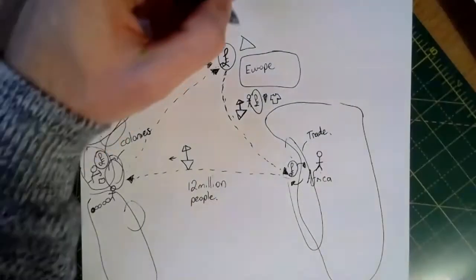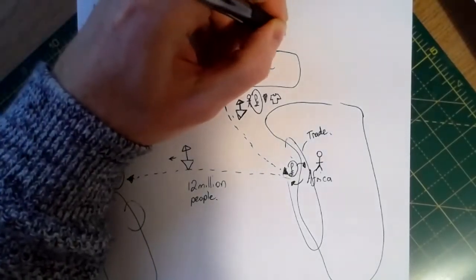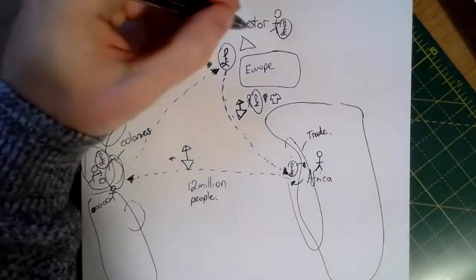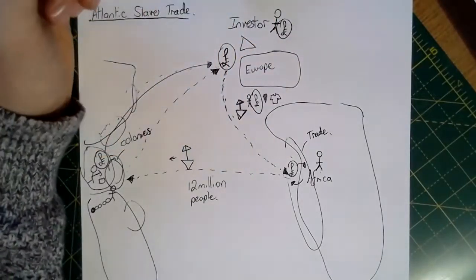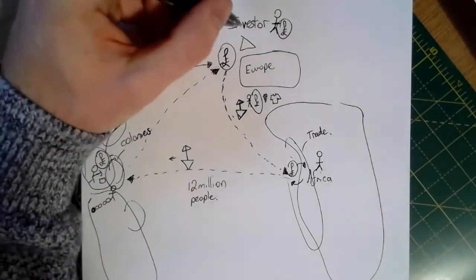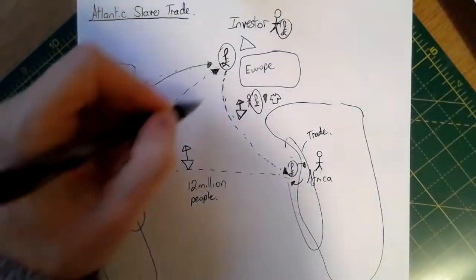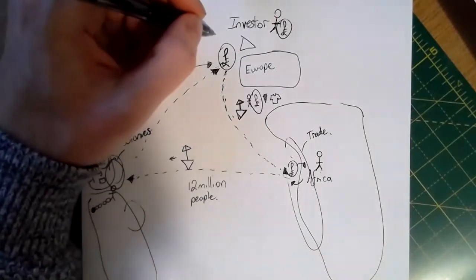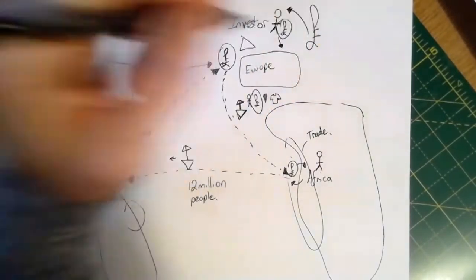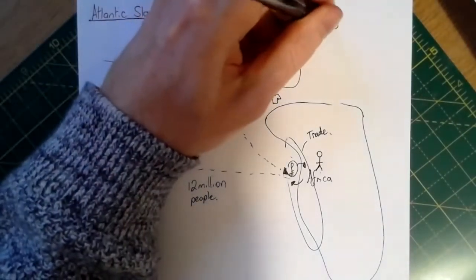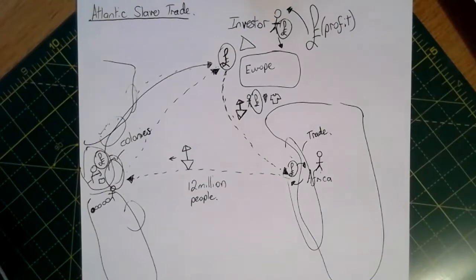Most people didn't have the money needed, so they needed an investor — someone with a huge amount of money. What they would do is lend money to the person on the ship, but only if they received money back. So they might lend a thousand pounds, but they expected profit on the return — when the ship came back from the Atlantic slave trade, they expected even more money back. Profit is when you make money off something — for example, I give you five pounds, you give me back seven pounds, I make two pounds profit.